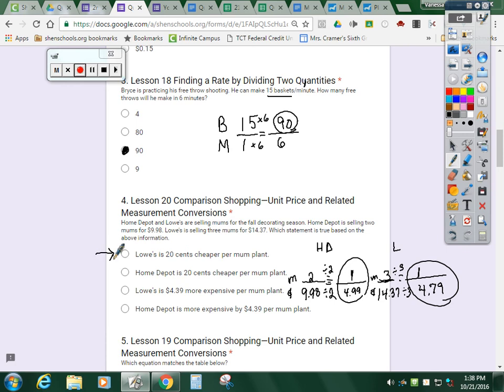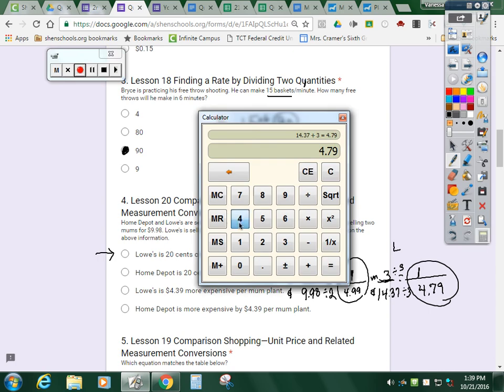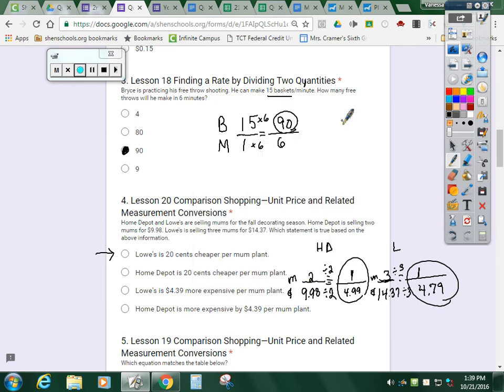So we have to pick the statement that's true based on that information. First one. Lowe's is 20 cents cheaper per mum plant. Well, let's look at these. Let me subtract them. $4.99 minus $4.79. Yes, that's 0.2. But don't forget you have to add a zero because money comes two spots after the decimal. So Lowe's is 20 cents cheaper per mum plant.